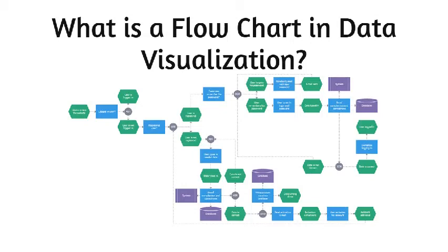Simple instructions or actions are represented by a rectangle, while a diamond shape is used when a decision is needed. There are also many other symbols that can be used in a flowchart. Flowcharts can run horizontally or vertically.